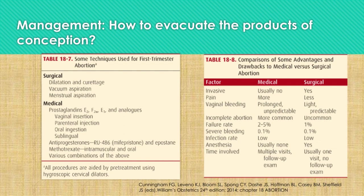Evacuation of the products of conception depends on whether the patient presents with a dilated or closed cervix. If the cervix is closed, we have to ripen or open the cervix further before proceeding with curettage. Techniques for first trimester evacuation include dilatation and curettage, vacuum aspiration, or menstrual aspiration. For medical evacuation, we can use prostaglandins, anti-progesterones, methotrexate, or various combinations.